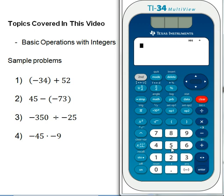Now we've got negative 45, and then remember the little dot means times, so it's times negative 9. Enter. And it gives us 405.